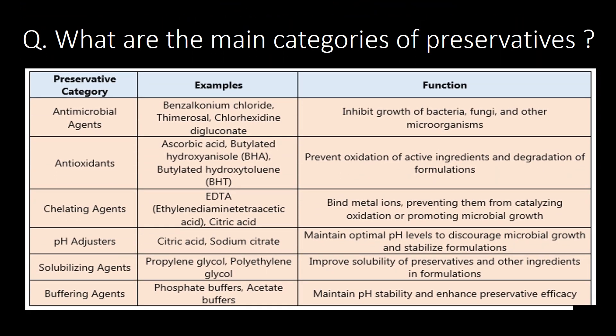What are the main categories of preservatives? The main categories of preservatives are antimicrobial agents, antioxidants, chelating agents, pH adjusters, solubilizing agents, and buffering agents. You can refer to the table for examples from each category of preservatives and the function of each category.